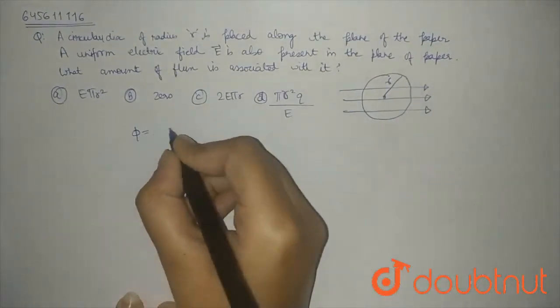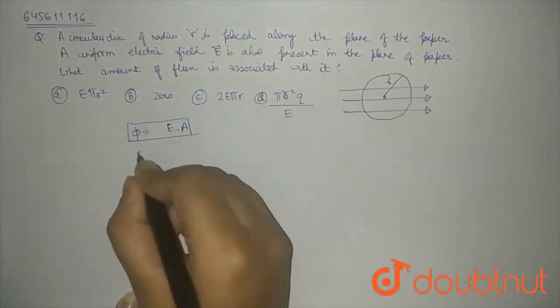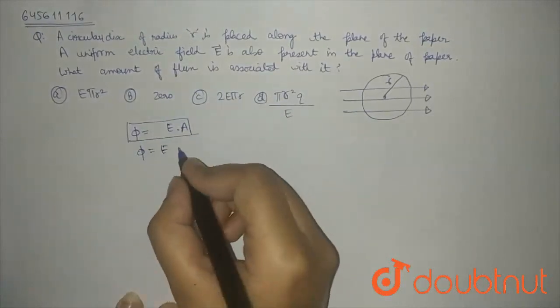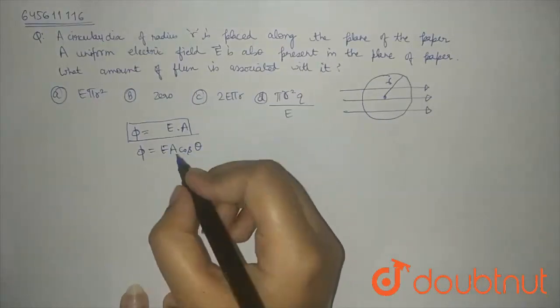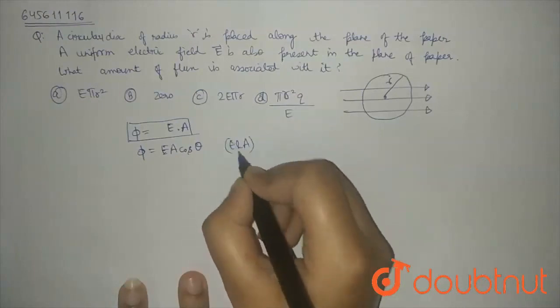As we know that the flux formula is E dot A. If I open it, I will find EA cos theta. So, I need to know the angle between E and A.